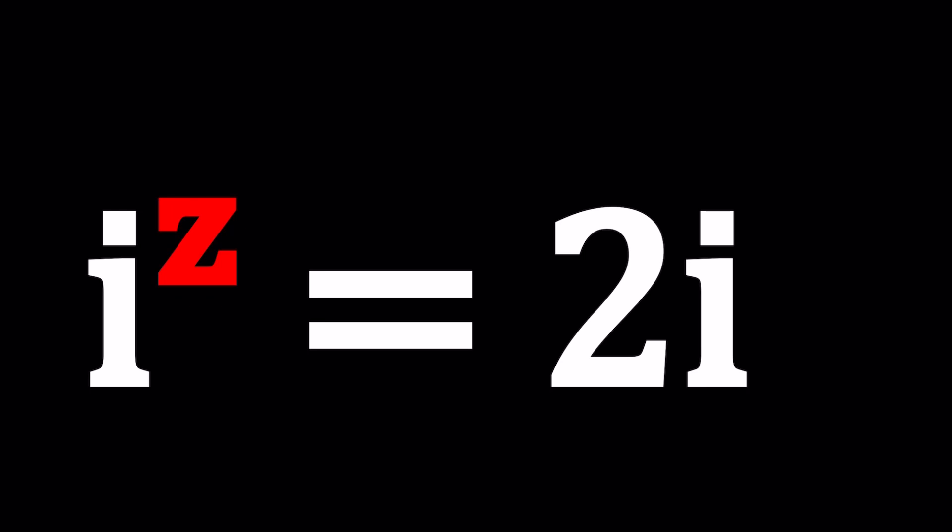This channel is all about complex numbers and in this video we're going to be solving an interesting equation with complex numbers. I call this equation interesting because we have an exponent that doubles. i to the power of z equals 2 times i.